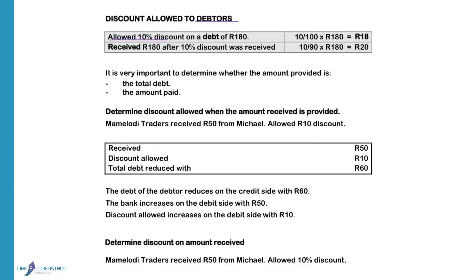When 10% discount is allowed on a debt, and the total debt is given as $180, then the total debt is 100% equals $180. To calculate the discount it will be 10 over 100. However, if we received $180 after 10% discount was allowed, then the $180 equals 90% of the total debt, so we divide by 90 and not 100.